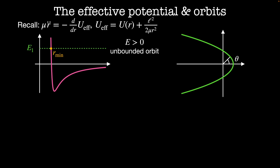If I start far away from the origin, I have mostly kinetic energy. Then I start slowly moving up the potential energy well, trading kinetic energy for potential energy. Then I reach the minimum radius where I have all potential energy and no kinetic energy,